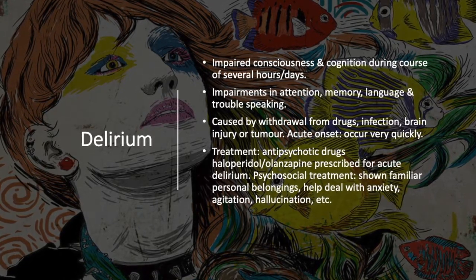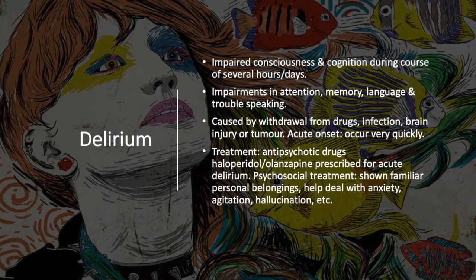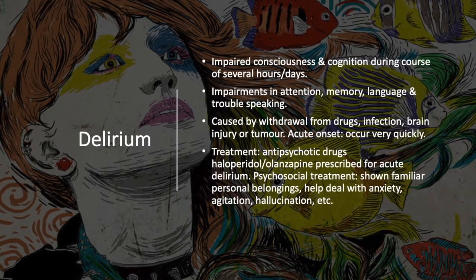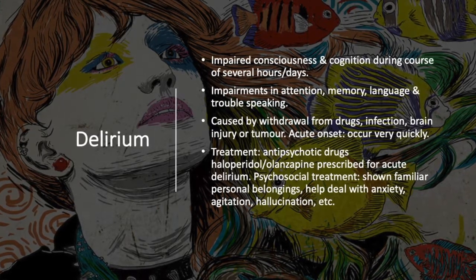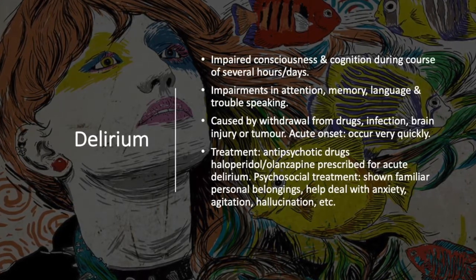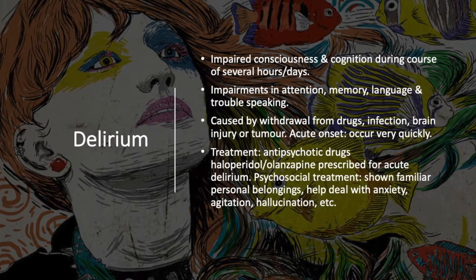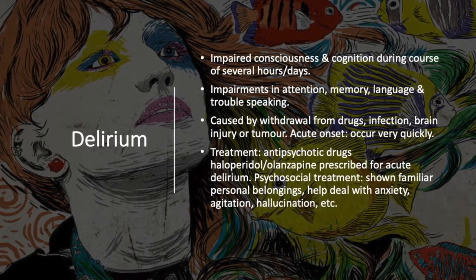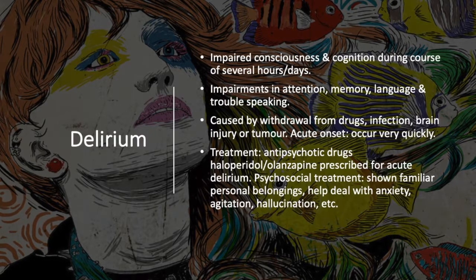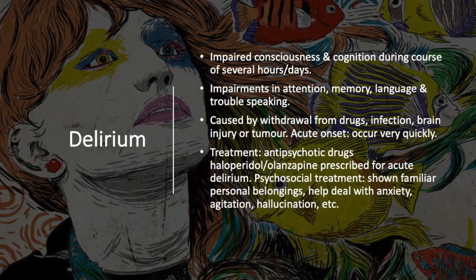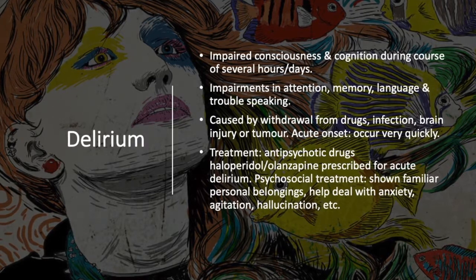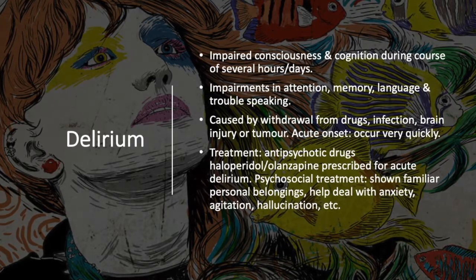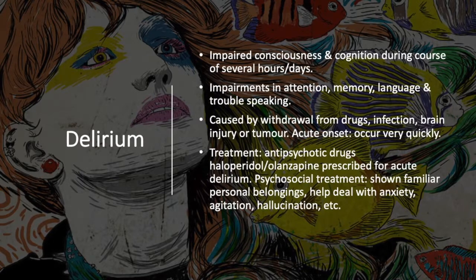There is acute onset whereby delirium occurs very quickly. Ways to treat delirium can include antipsychotic drugs like haloperidol or olanzapine, which are prescribed for acute delirium. There are also psychosocial treatments in which individuals with delirium are shown their familiar personal belongings, which helps them deal with anxieties, agitation, and hallucinations.